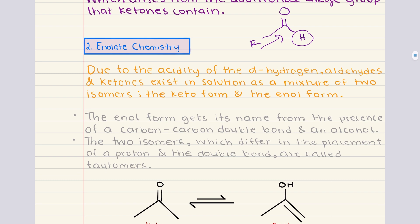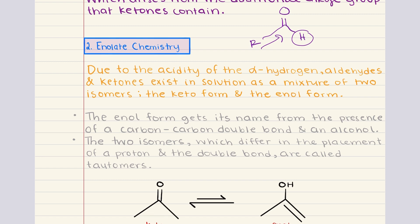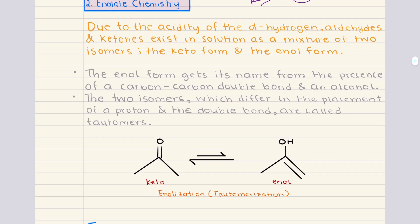So everything we've covered so far from the acidic nature of alpha hydrogens to the resonance stabilization of enolates to the reactivity difference between aldehydes and ketones sets the foundation for the reactions we're about to cover. So let's move into our second objective on enolate chemistry. A key consequence of alpha hydrogen acidity is that aldehydes and ketones can exist in solution, not as a single structure, but as a mixture of two isomers. These are known as the keto form and the enol form. And this equilibrium between forms is called tautomerization. And specifically in this case, it's referred to as keto-enol tautomerization.